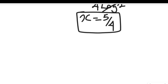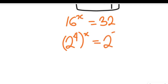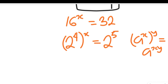Now let's look at the second method. We are given 16 to the power of x equal to 32. We factor out these expressions: 2 to the power of 4, all to the bracket of x, equals 2 to the power of 5. According to the law of indices, a^(x×y) equals a^(xy), so this becomes 2 to the power of 4x equal to 2 to the power of 5.